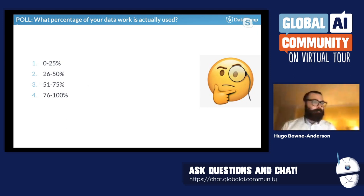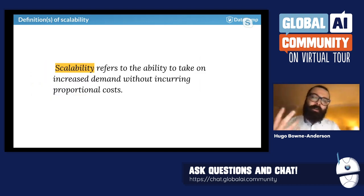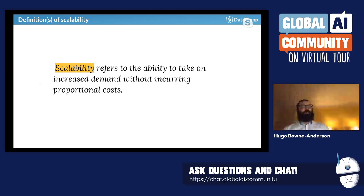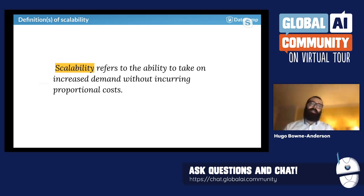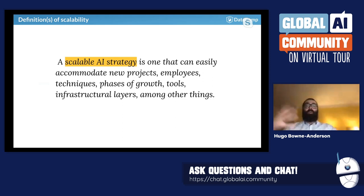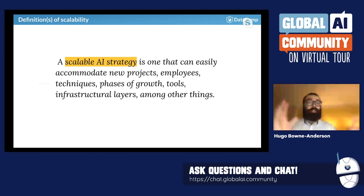Thank you very much, Eva. If we're talking about scalability of AI and data strategy, what are we talking about? Scalability refers to the ability to take on increased demand without incurring proportional costs — there are adjacent definitions including harnessing network effects, but that's a nice baseline. A scalable AI strategy can easily accommodate new projects, new employees, techniques, phases of growth, tools, and infrastructural layers. When we talk about scaling, we're really talking about making things widespread — not making the impossible possible, but making the possible widespread.